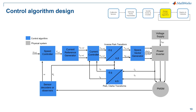Now let's dive into field orientation control algorithms for brushless motors. As you can see from this overview system-level block diagram, we differentiate the control algorithm and physical system by colors. On the control side, there are many components such as Park and Clarke transformation to convert current and voltage between stationary reference frame and synchronized reference frame.